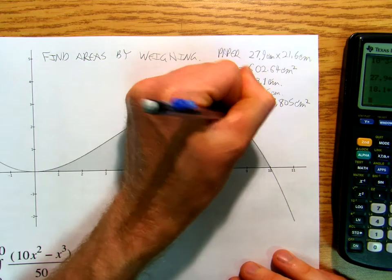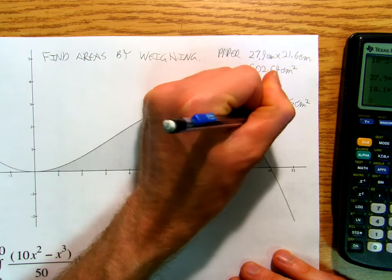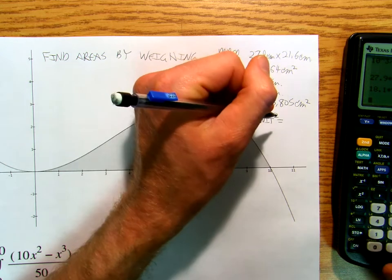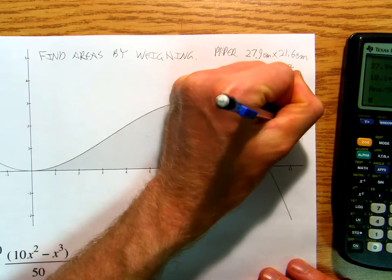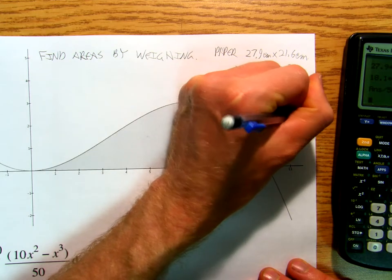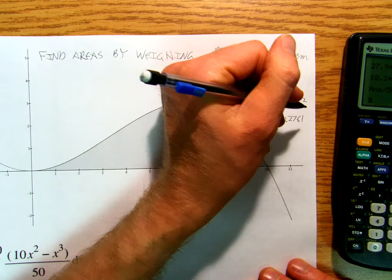So that means that 1 unit squared, divide that by 50 and I get 3.2761 centimeters squared.